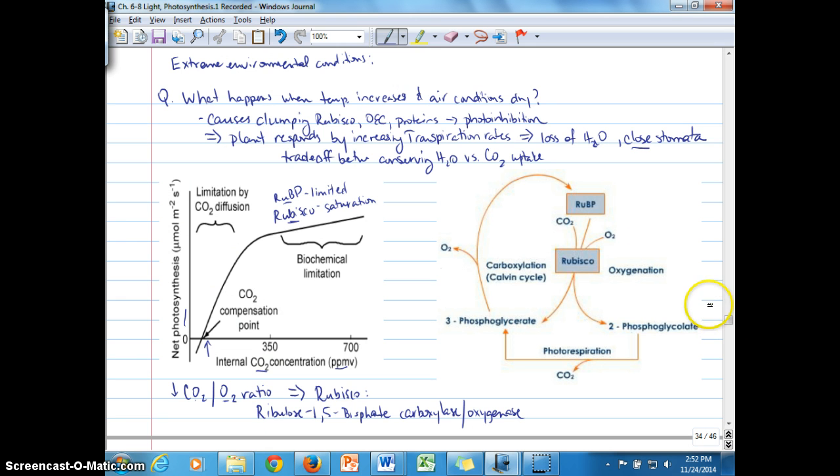then the oxygen concentration can, basically oxygen can outcompete CO2 for that binding site. So the binding site, the active site that allows CO2 to bind to RUBISCO can also bind to oxygen. And when it binds to oxygen, then we look over here.